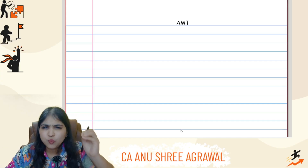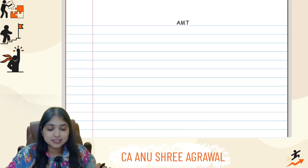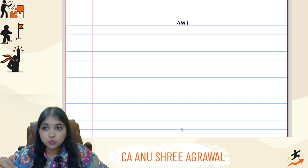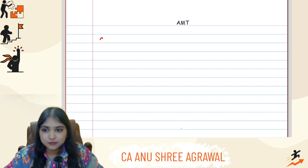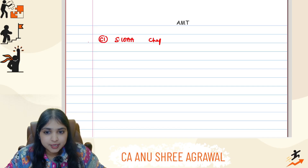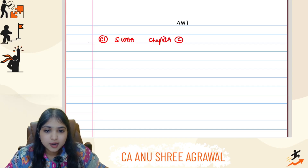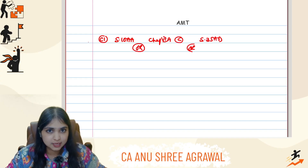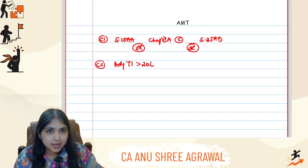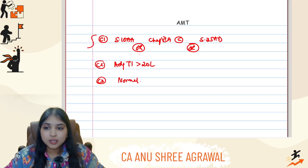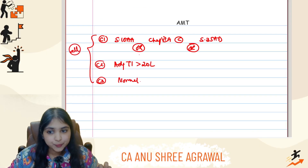A quick reminder about AMT — Alternate Minimum Tax. When will you even think about doing this computation? Only if three conditions are fulfilled. Condition one: the assessee must be having Section 10AA, or Chapter 6A Part C deductions, or Section 35AD — at least one of these three. Condition two: the adjusted total income of the assessee has to be more than ₹20 lakh. Condition three: the assessee must be following the normal regime. Only if all three conditions are fulfilled will you do AMT computation.